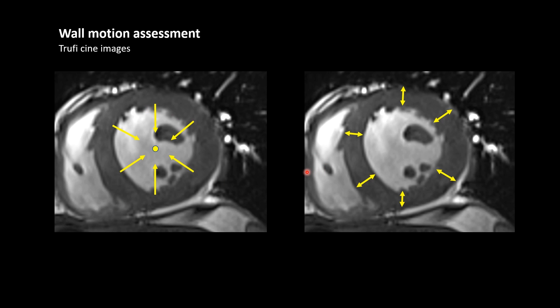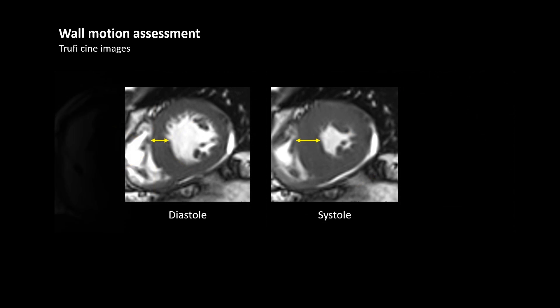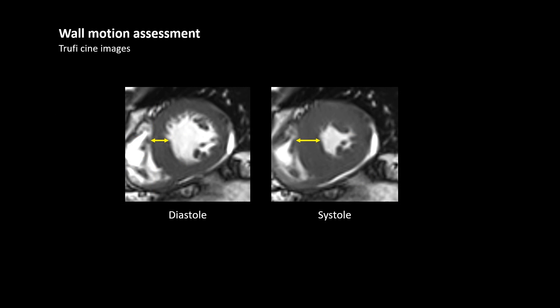Another method is to look for change in thickness of the myocardium. In diastole it will be reduced, and as it contracts, the thickness should increase. In diastole it is thin and as it contracts it becomes thicker.